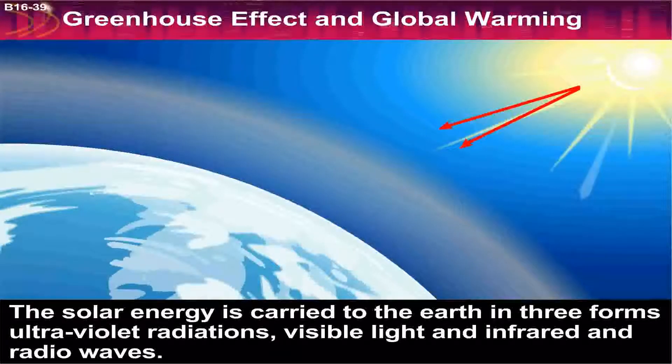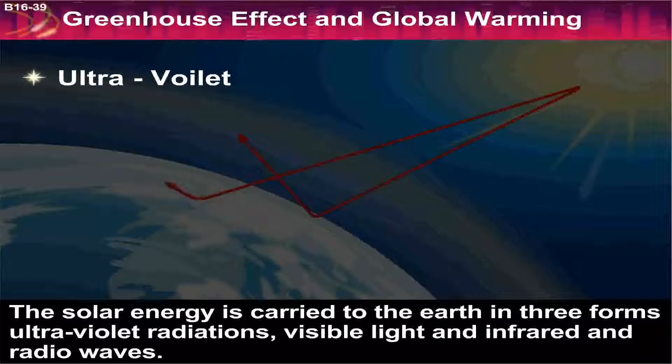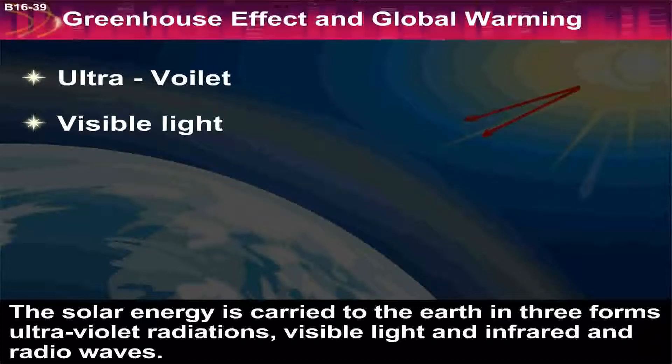Greenhouse Effect and Global Warming. The solar energy is carried to the earth in three forms: ultraviolet radiations, visible light, and infrared and radio waves.